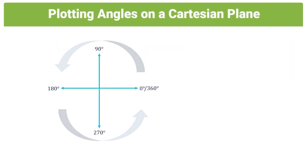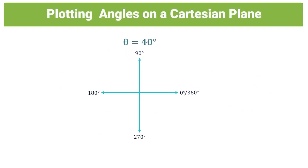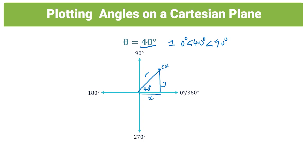On the Cartesian plane we have four quadrants: Q1 is 0°–90°, Q2 is 90°–180°, Q3 is 180°–270°, Q4 is 270°–360°. Let's plot some angles. 40° goes in the first quadrant (between 0° and 90°). We mark the point and draw our radius, giving us x, y, and r.